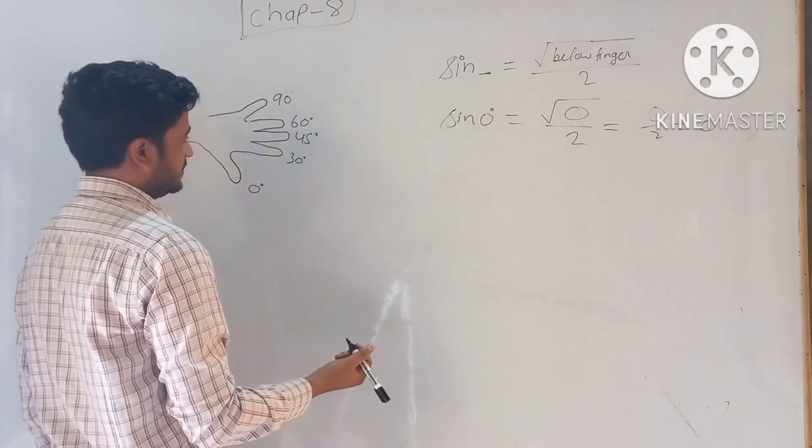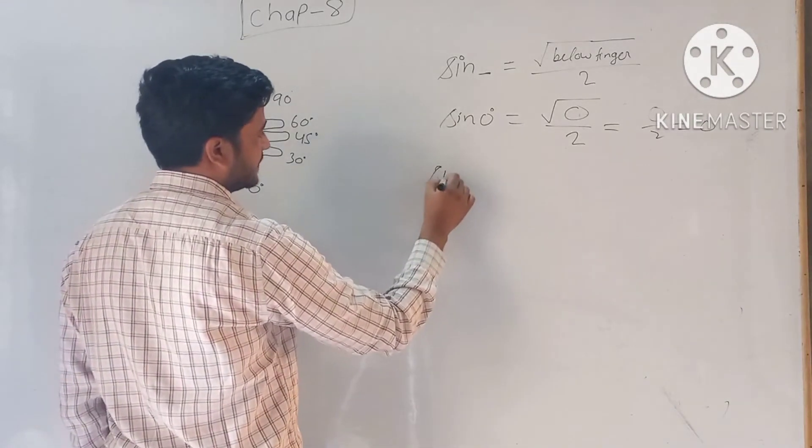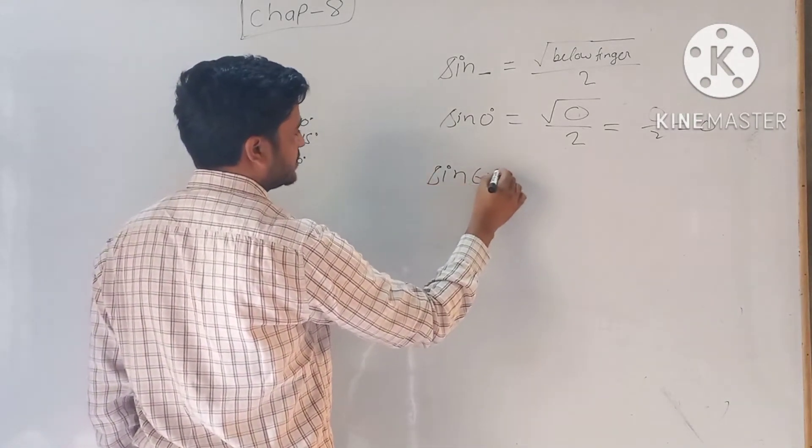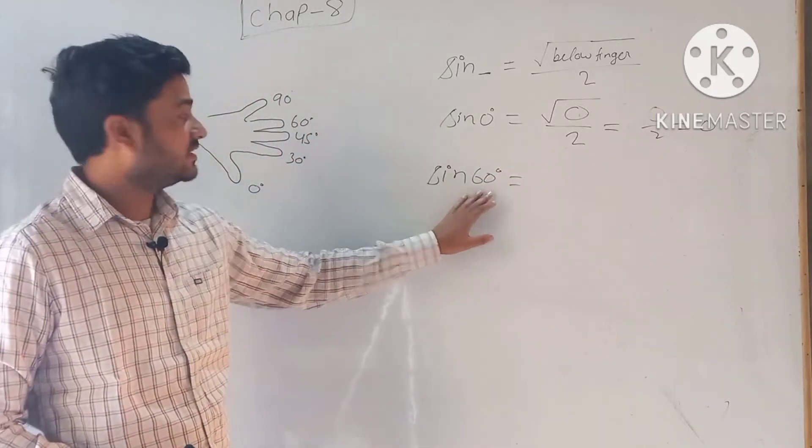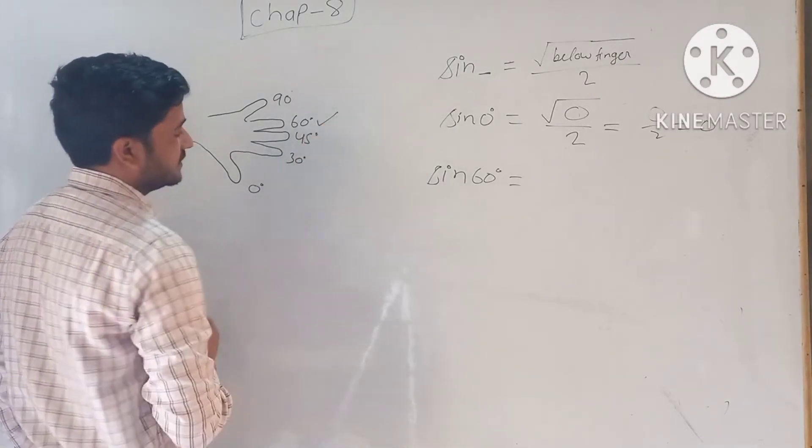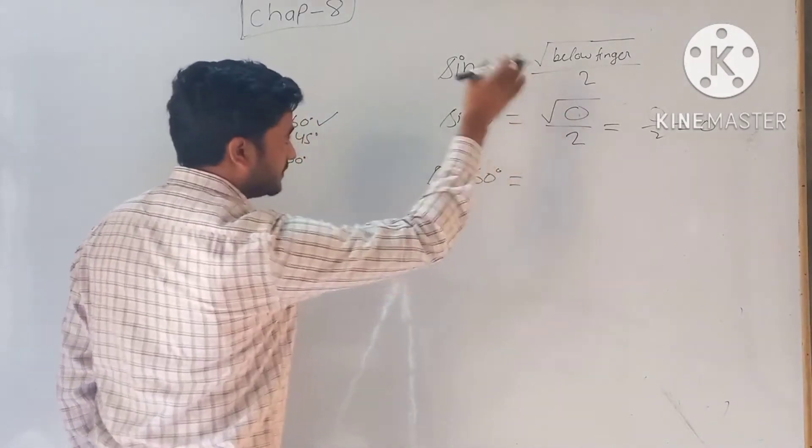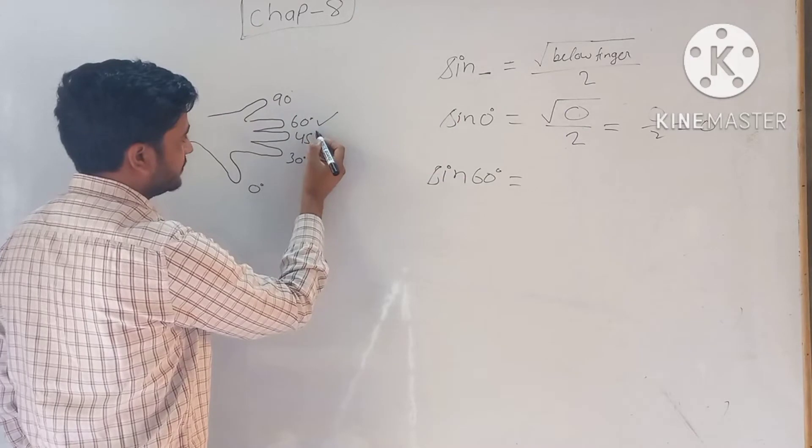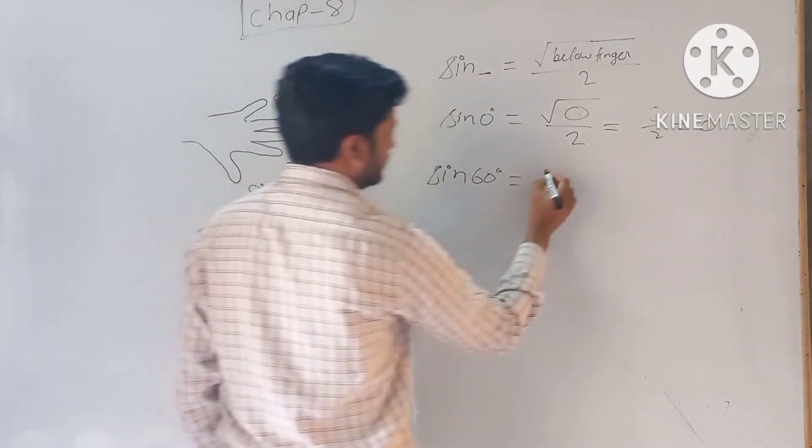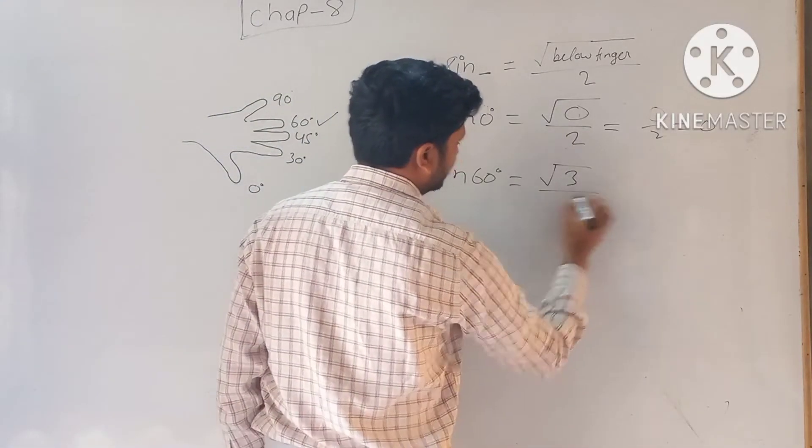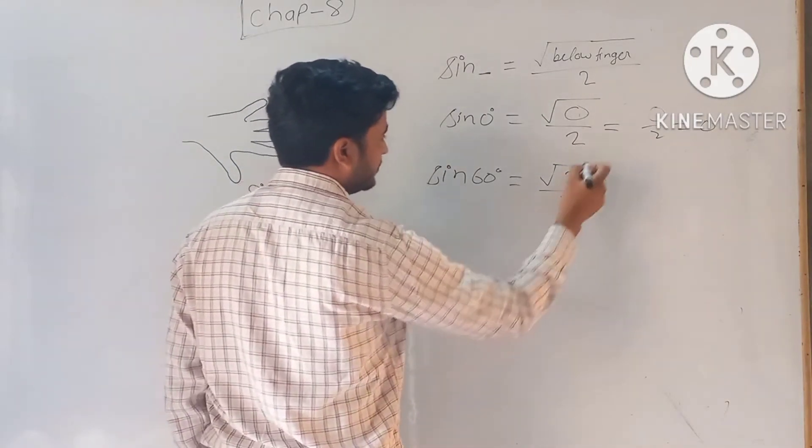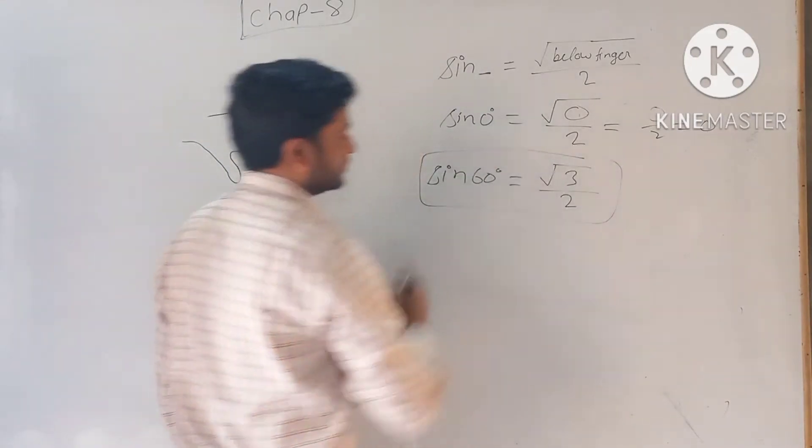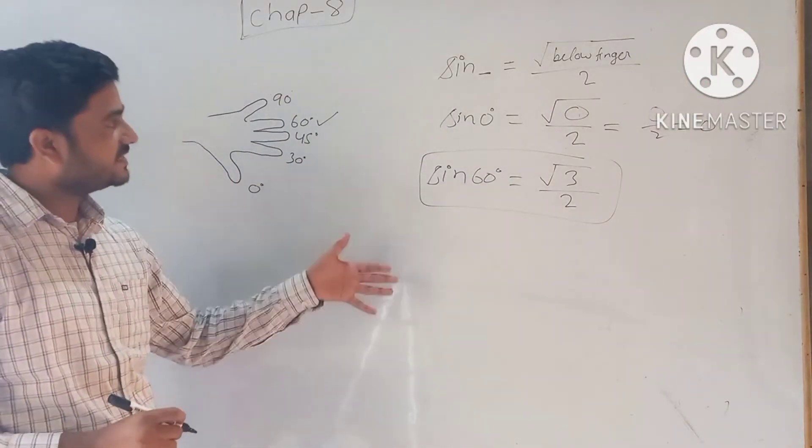Let's take another example: sin 60 degrees. Check the angle - 60 degrees. Below the finger, 60 degrees means how many fingers? 1, 2, 3. So under root 3 upon 2. Sin 60, this is our value. So this is how sine works.